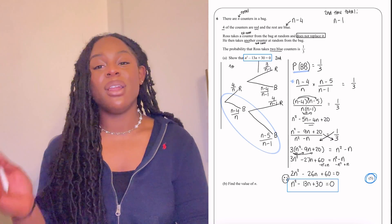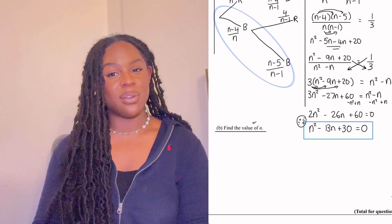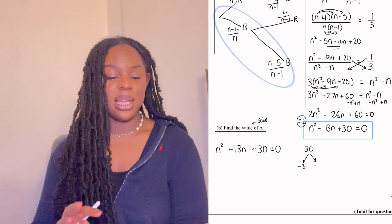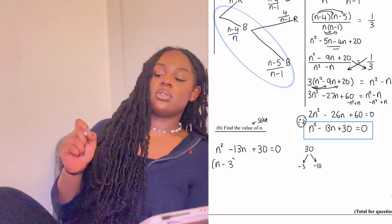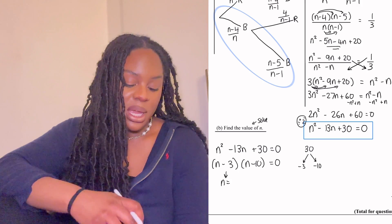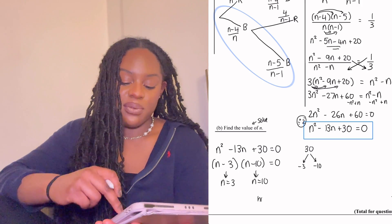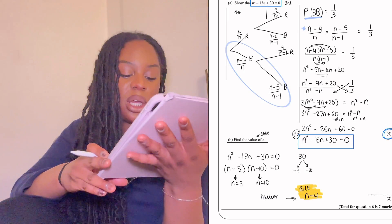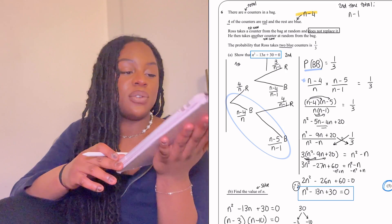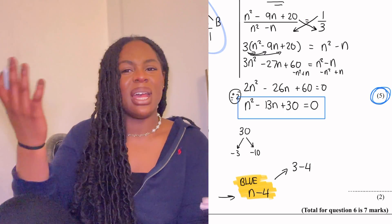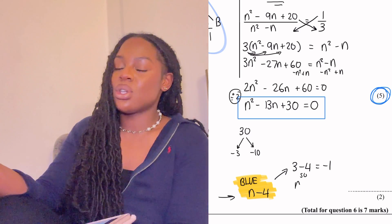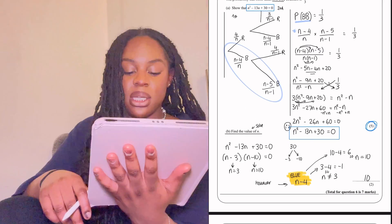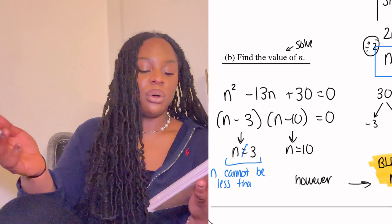The last part is solving for n. We factorise: we need two numbers that multiply to give 30 and add to give minus 13 — that's minus 3 and minus 10. So (n minus 3)(n minus 10) equals zero, giving n equals 3 or n equals 10. However, the question asks for the value of n — only one answer. If n equals 3, then n minus 4 gives minus 1, and we can't have minus 1 of a counter. So the only valid answer is n equals 10, because 10 minus 4 gives 6. Write a note: n can't be less than 4. Seven marks done.